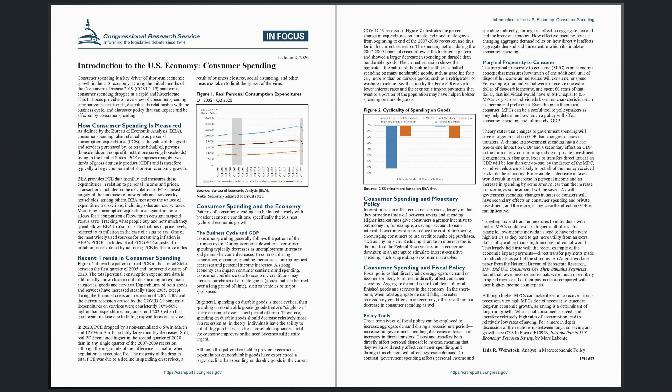Theory states that changes to government spending will have a larger impact on GDP than changes to taxes or transfers. A change in government spending has a direct one-to-one impact on GDP and a secondary effect on GDP in the form of any consumer spending or private investment it engenders. A change in taxes or transfers' direct impact on GDP will be less than one-to-one, by the factor of the MPC, as individuals are not likely to put all of the money received back into the economy. For example, a decrease in taxes would result in an increase in personal income and an increase in spending by some amount less than the increase in income, as some amount will be saved. Changes in taxes or transfers will have secondary effects on consumer spending and private investment, and therefore, in any case the effect on GDP is multiplicative.